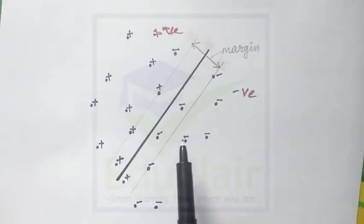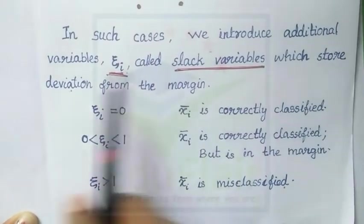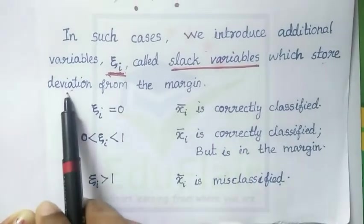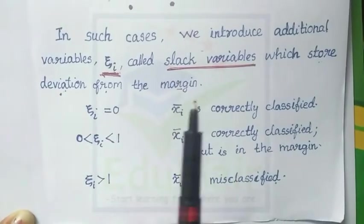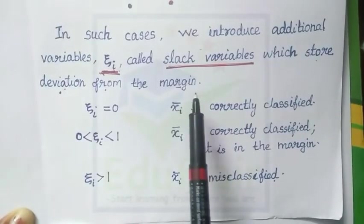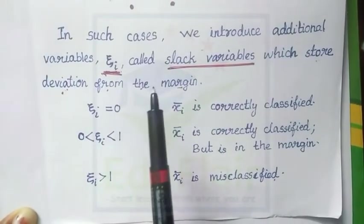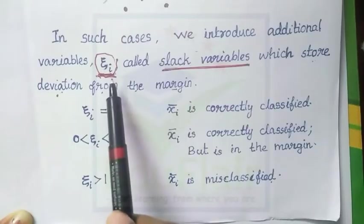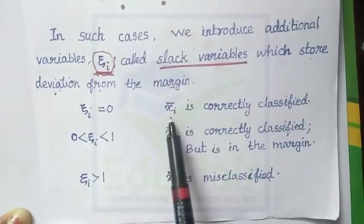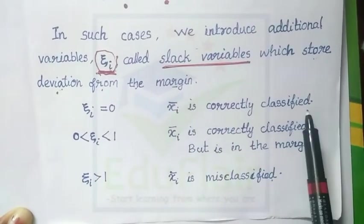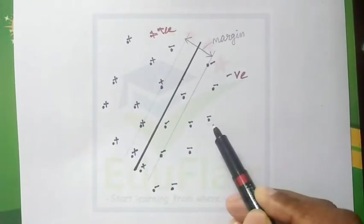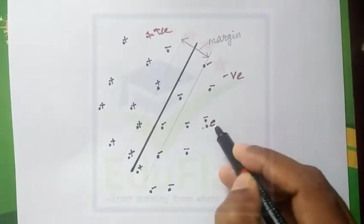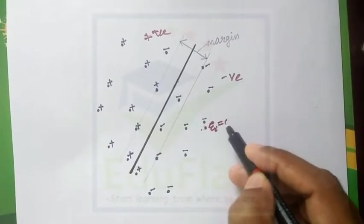In such cases, we introduce an additional variable ψᵢ called slack variables, which store the deviation from the margin. For a data point that is a negative sample, correctly classified and not in the margin, the slack variable ψᵢ for that data point is 0.